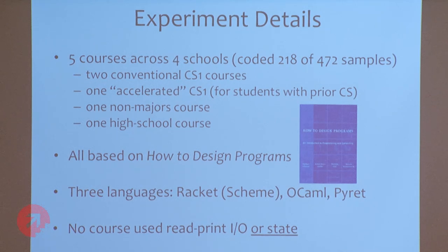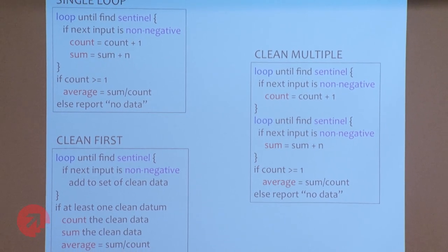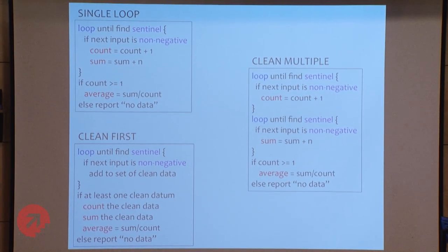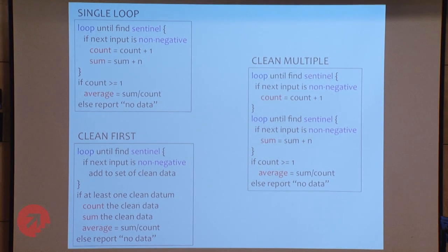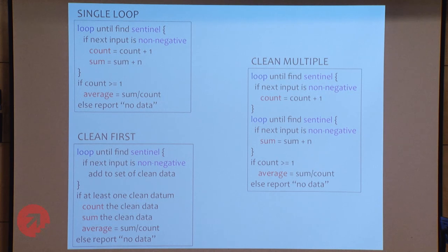Now we're back to your solutions. I'm going to put up three high-level structures of solutions. Top left: the single loop solution does one iteration over the input data — you loop until you hit the sentinel, check for non-negatives, maintain sum and count, and after one traversal compute the average. Lower left: clean first — you do a pre-loop to chop off the data at the sentinel and throw away the negatives, leaving only the numbers you want to average, and then separately compute the average. It's at least a two-loop solution with the first one cleaning. Third solution on the right: cleaning multiple times — one loop handles counting and cleaning, a separate loop over the original data does cleaning and summing, then you compute the average.